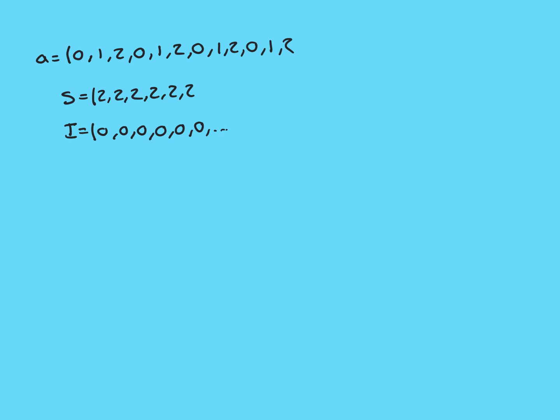So the supremum sequence is just going to be 2, 2, 2, 2, 2 — this constant sequence. And obviously it has a limit; its limit is 2. So the limit superior of the sequence is 2.